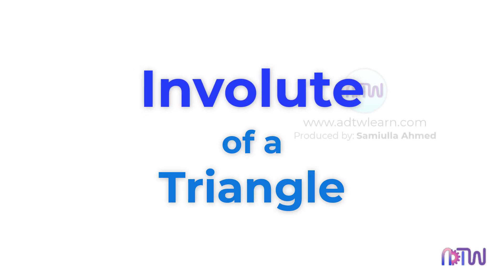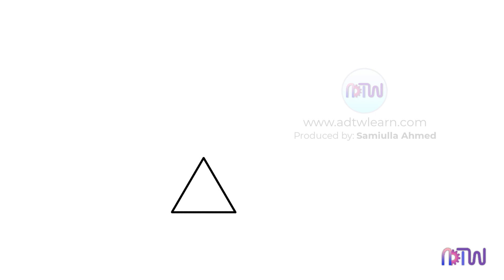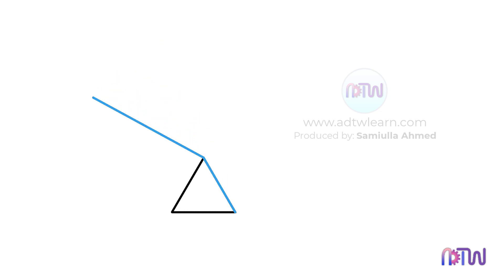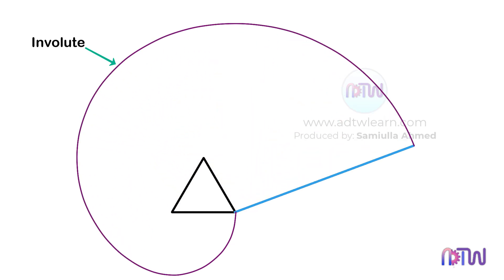Involute of a triangle. In this video, we will see how we can draw an involute of a triangle. Let's first understand what involute of a triangle means. Suppose there is a triangular shape, and this shape is wound with a rope whose length is equal to the perimeter of the triangle. And if we unwound this rope from the triangle, the path taken by the endpoint of this rope is known as the involute of this triangle.